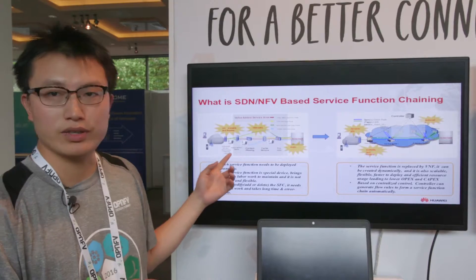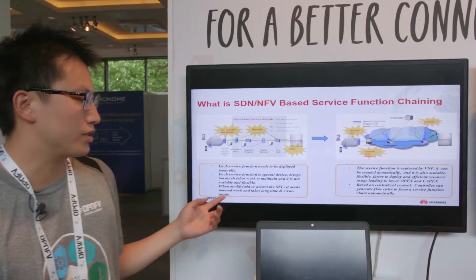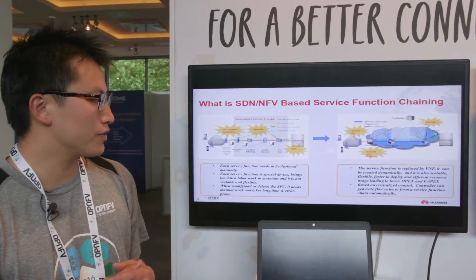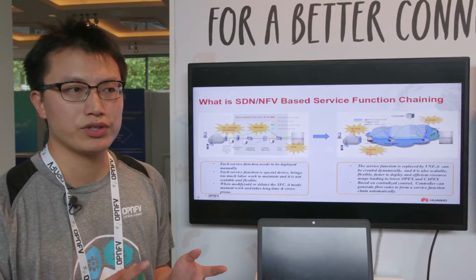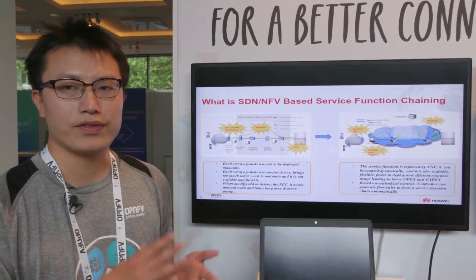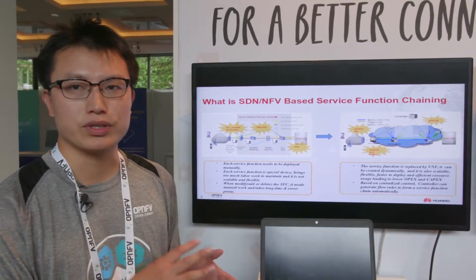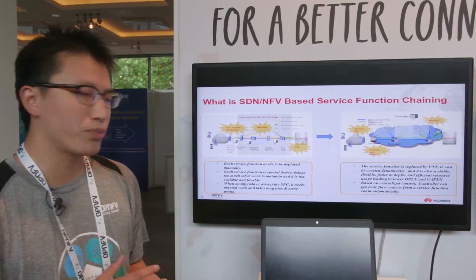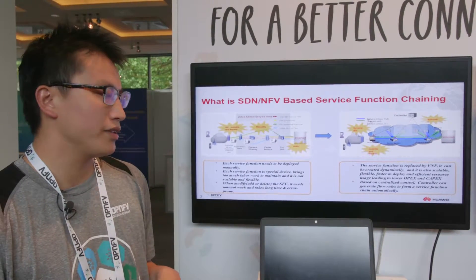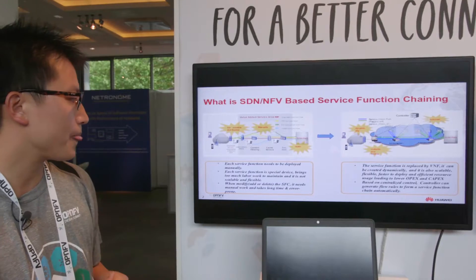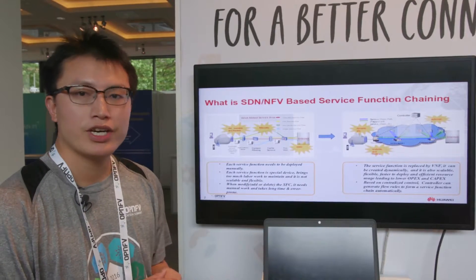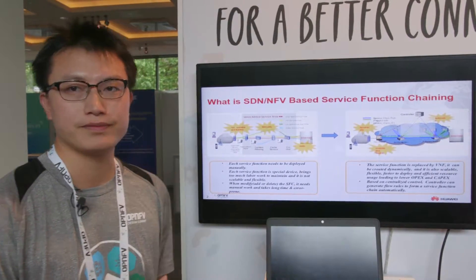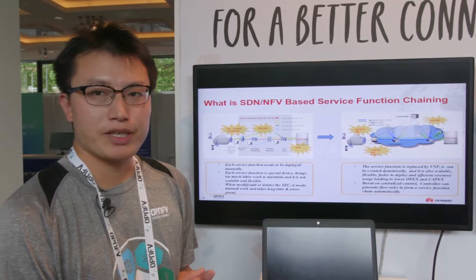As the picture shows, it is used in the mobile network edge. In traditional use cases, there are three shortcomings. One is that each service function needs to be deployed manually — you need to configure each service function and set them up one by one to form a chain. The second is that each service function is a special device, which brings too much labor to maintain and is not scalable or flexible. The third is that when you modify the SFC, it requires manual work, takes a long time, and is error-prone.